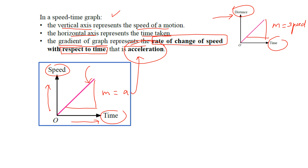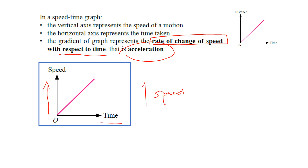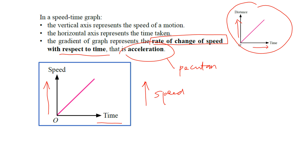Acceleration is the rate of change of speed. The speed is increasing with respect to time — we call that acceleration. That means there is a change of speed, so the unit is meters per second squared. For the distance-time graph, the distance is increasing with time and you can find the speed. So speed is different from acceleration — there is a clear difference.